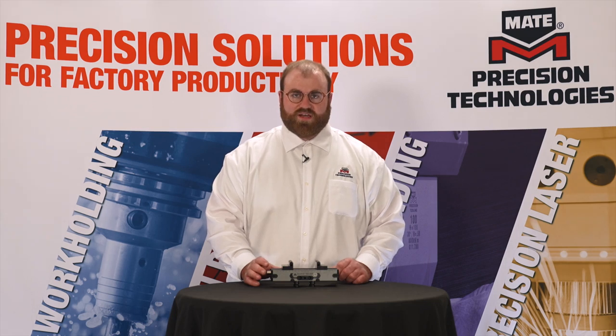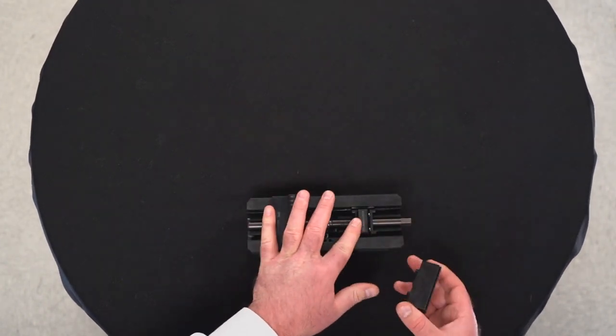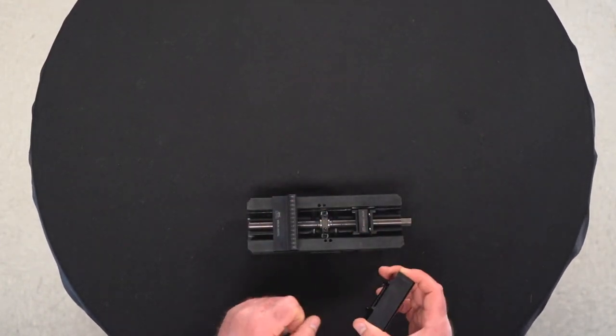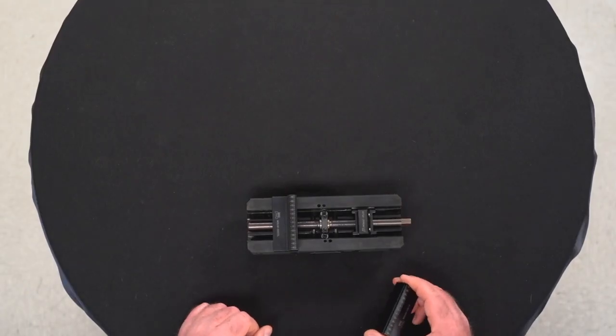All Mate dyno grip vices feature an anti-lift design. The anti-lift design comes from the interaction between the jaw pusher and the jaw. The interaction occurs at a 45 degree angle which generates a downward force to minimize the jaw lift.